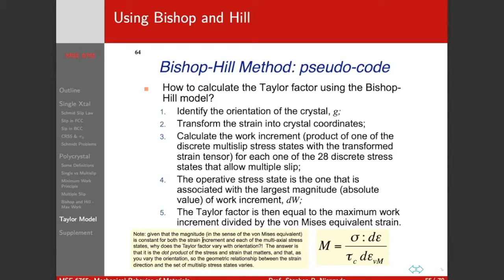How do we use all this? Here is pseudocode for how you work a Bishop-Hill problem. We identify the orientation of our crystal and have a strain we're applying, so we transform that to the crystal coordinates. We compute the work increment of each of the 28 stress states, plus and minus, so we do 56 total. The operative stress state is the one associated with the largest magnitude of the work increment. That also tells us which either six or eight slip systems are going to be activated. The Taylor factor is then equal to the maximum work increment divided by the von Mises equivalent strain.